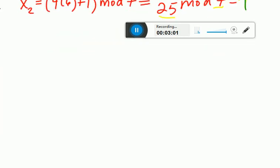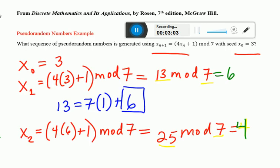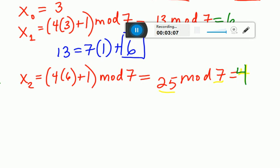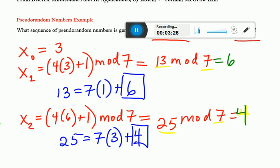Again using the division algorithm, if I break this up according to the division algorithm mod 7, I get 25 = 7(3) + 4. That gives me 21, and to get up to 25 I have to add 4. That's the remainder we're looking for, so x_2 = 4.